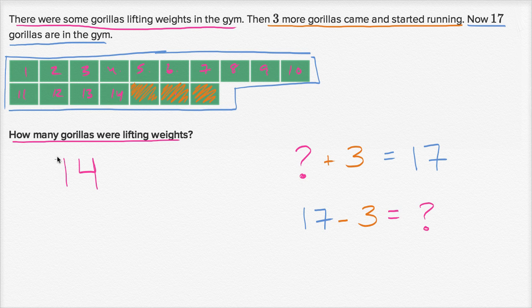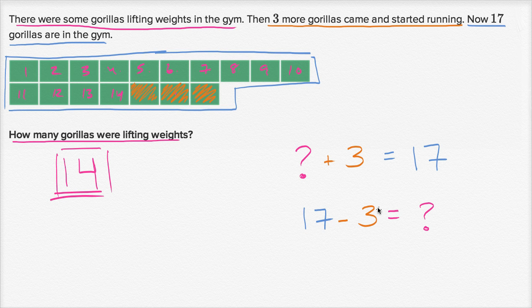Either way you think about it, you're going to get to 14. 17 minus three — this 17 is one 10 and seven ones. So you take away three ones: seven minus three is four. So 17 minus three is going to be 14. Let's do another one of these.